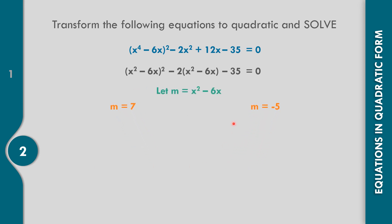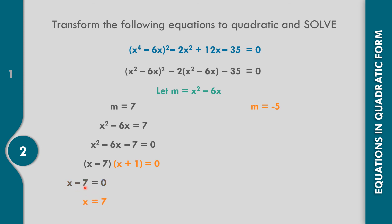Since m = x² - 6x, let us replace m with 7: x² - 6x = 7, which gives x² - 6x - 7 = 0. Find factors with sum -6 and product -7: that is -7 × 1. So the factors are (x - 7)(x + 1) = 0. Solving: x - 7 = 0 gives x = 7, and x + 1 = 0 gives x = -1. The first two values of x are 7 and -1.